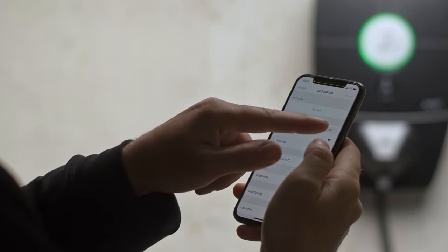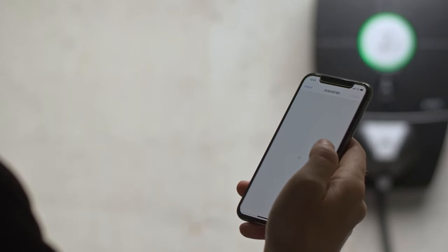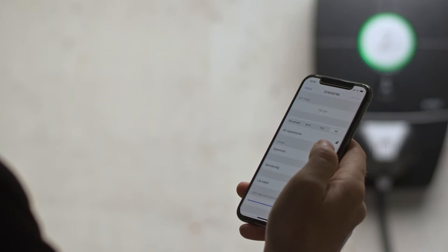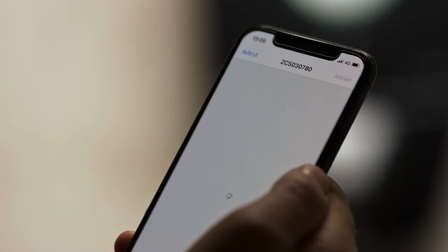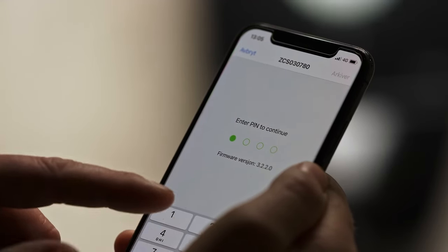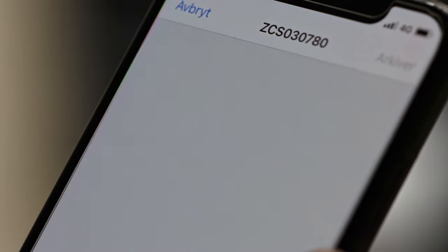Log in to the Zaptec app and select Check power grid to change to the correct power grid. Use the Zaptec app to connect the charging station to the network via 4G, Wi-Fi, or PLC communication.